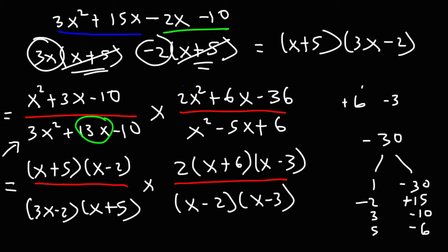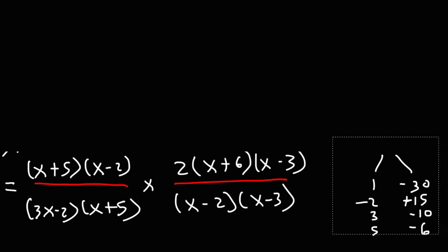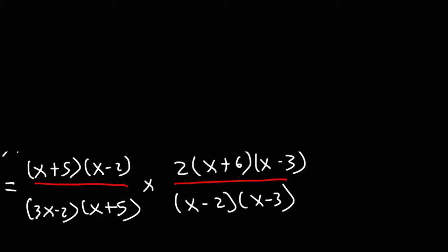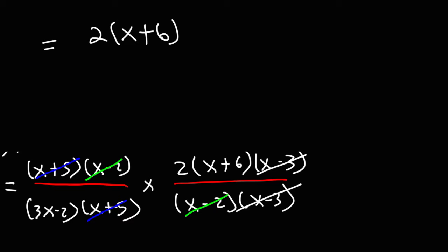You could FOIL it to verify you get back what you started with. Now let's simplify our rational expressions. We can cancel the x minus 2 factor, the x plus 5 factor, and the x minus 3 factor. So what we're left with is 2 times x plus 6 divided by 3x minus 2. So this is the final answer.